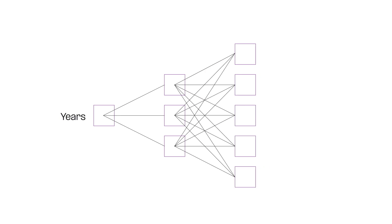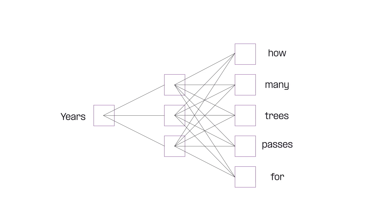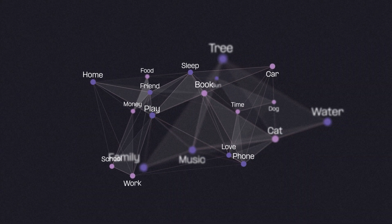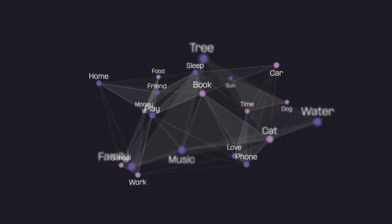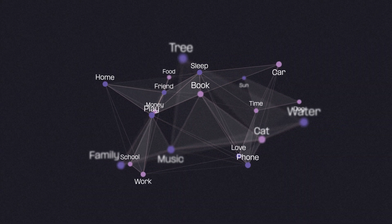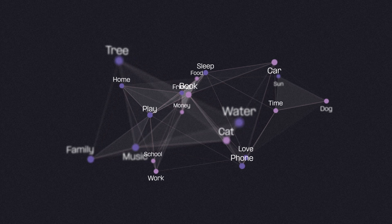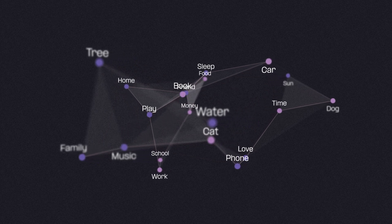Skip-Gram, on the other hand, does the exact opposite by using a target word to predict words that usually appear around it. Using the same backpropagation algorithm, it learns how to accurately predict the context words from the input word. As a result, each word is represented as a point in a high-dimensional space called the embedding space, which has some very interesting and useful properties.